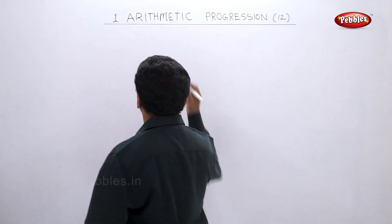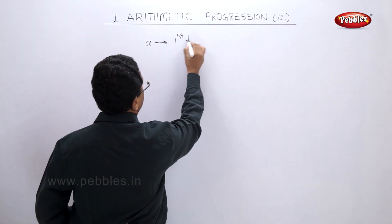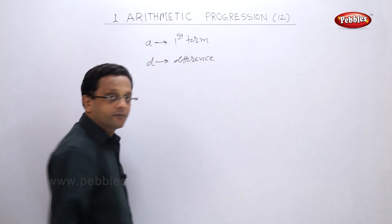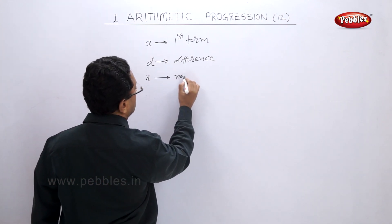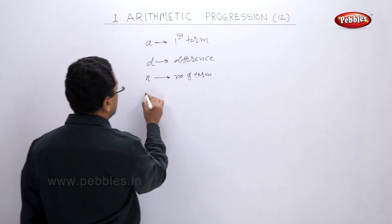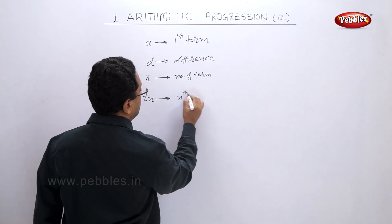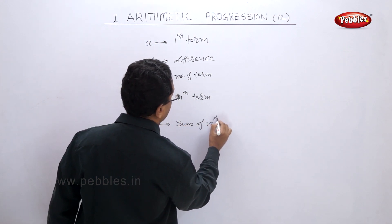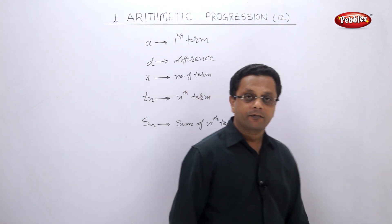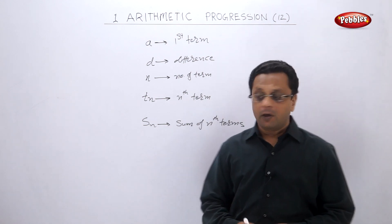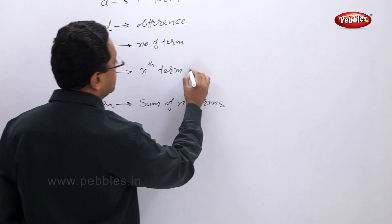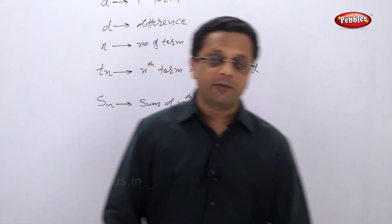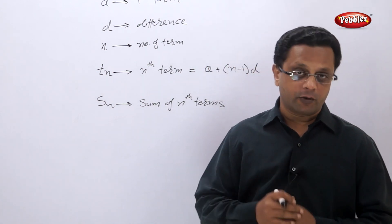In arithmetic progression, you have: a — the first term; d — the common difference; n — the number of terms; tn — the nth term; and sn — the sum of n terms. This is the general nomenclature for arithmetic progression. The formula for the nth term is: tn = a + (n − 1) × d. This is the general nth term formula for arithmetic progression.